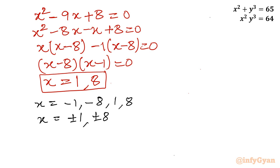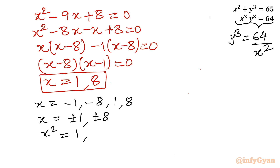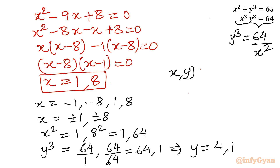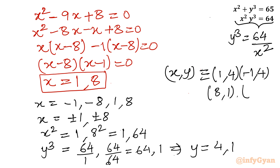Calculating y cubed: y cubed equals 64 over x squared. For x squared equal to 1 and x squared equal to 64, the y cubed values are 64 and 1 respectively. So y equals 4 and y equals 1. The ordered pair solutions are (1,4), (-1,4), (8,1), and (-8,1) — the same solutions again.